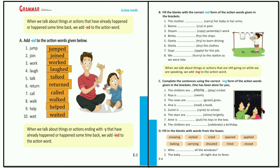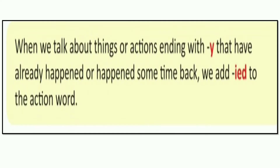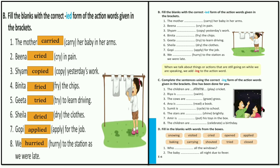When we talk about things or actions ending with Y that have already happened or happened some time back, we add IED to the action word. According to the words, if the action word is ending with Y, when we are changing it into the past form, Y goes away and we add IED.